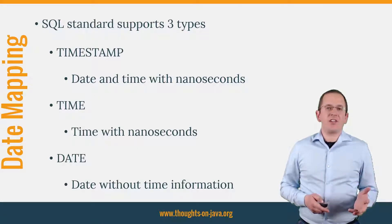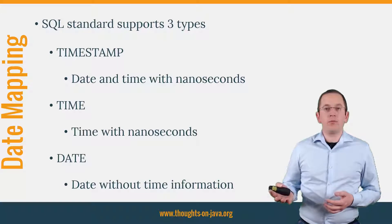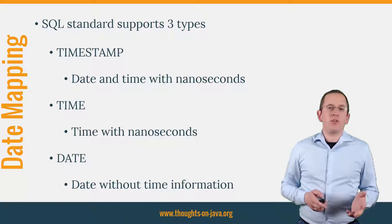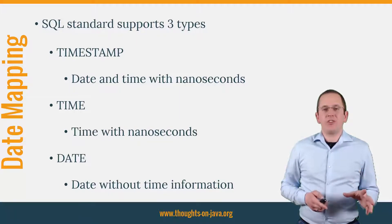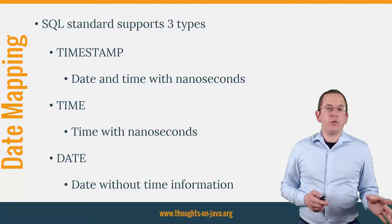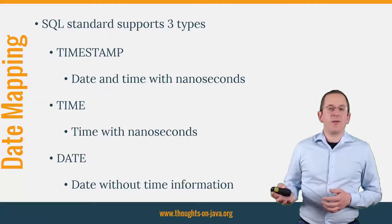The SQL standard supports 3 different data types to store date and time information. Hibernate can map all of them to a java-util-date or a java-util-calendar. You need to decide which of these SQL types Hibernate shall use. Timestamp stores the date and time with nanoseconds — Hibernate uses this type by default. Time stores only the time of day without nanoseconds. And date persists only the date with years, months and days.